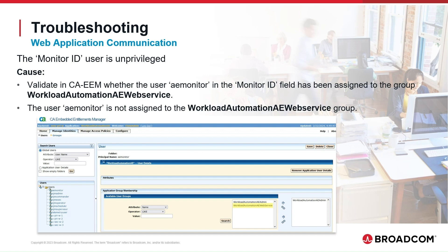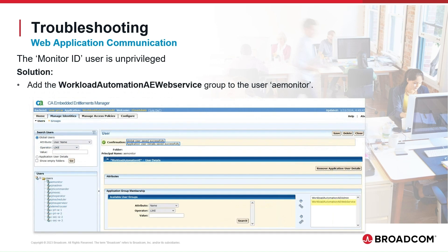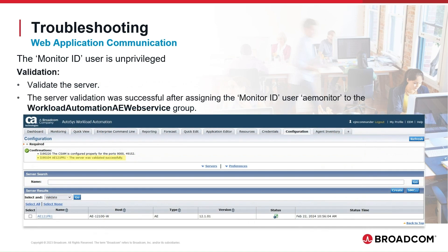The group Workload Automation AE web service is the group that controls access to web services. To solve the problem, we must ensure the monitor user belongs to this application group. We add the user to the group. We validate the server again on the Autosys Web UI and the validation was completed successfully. We solved the problem by assigning the monitor user to the Workload Automation AE web service application group.